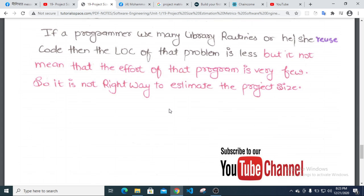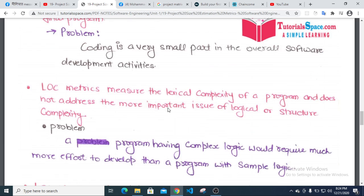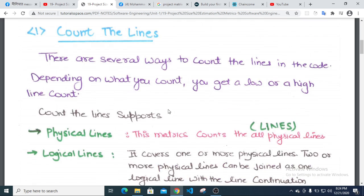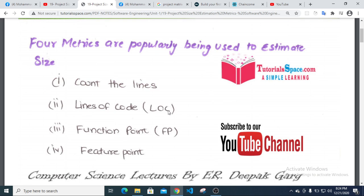Therefore, we should use other metrics like function point metrics and feature point metrics to estimate project size, not just count the lines or lines of code metrics.